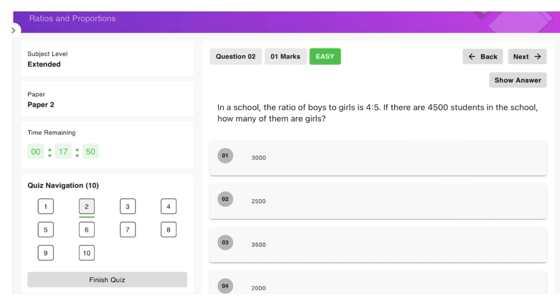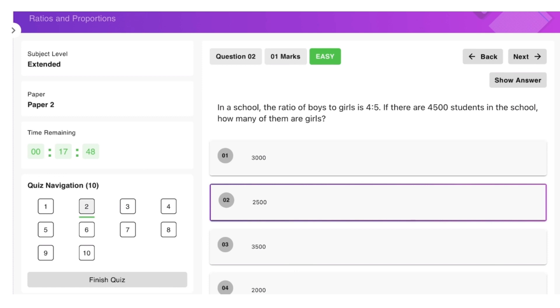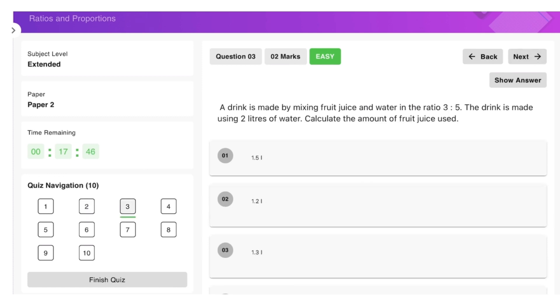All righty, then we have: a drink is made by mixing fruit juice and water in the ratio of 3:5. This is the juice, this is the water, and we are using 2 liters of water. If we want to figure out how much juice we have, we have to divide by the 5 parts to give us how much one part is worth, and then multiply by 3. So the answer here will be 6 over 5, which is the same as 1.2, so the answer would be 1.2 liters.